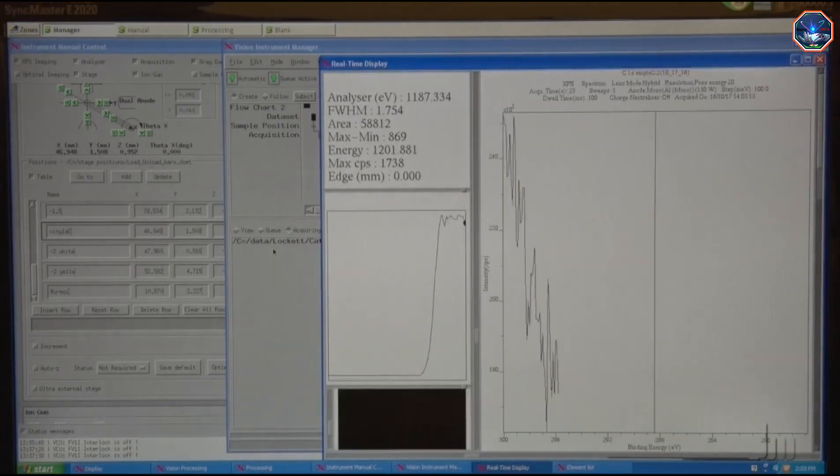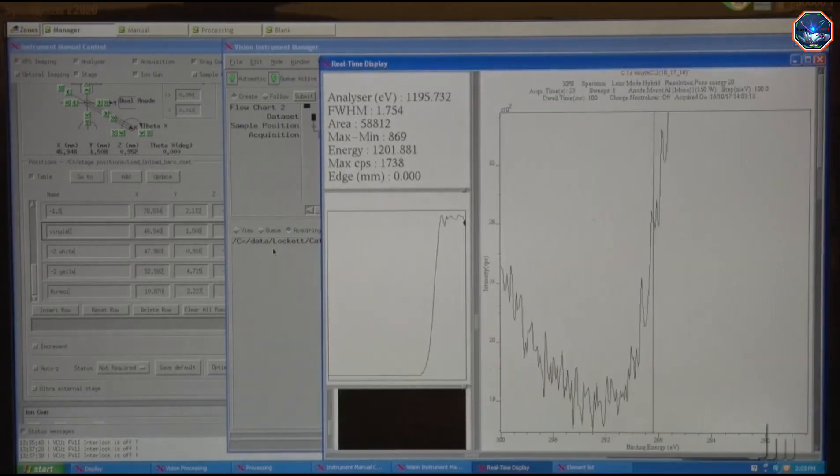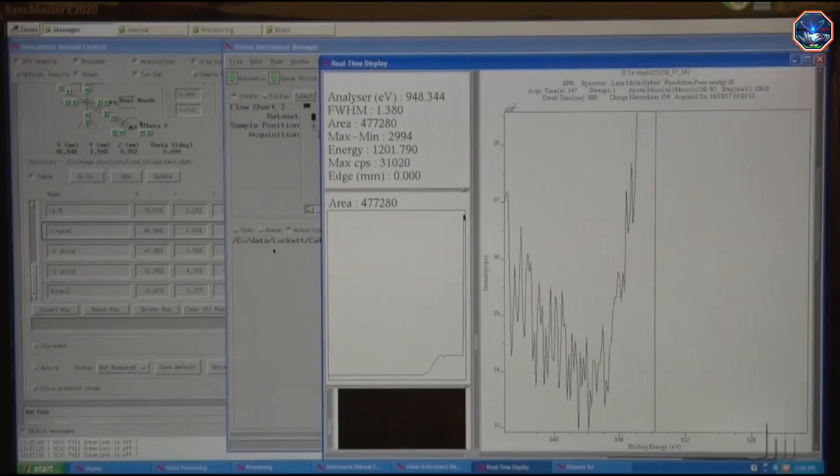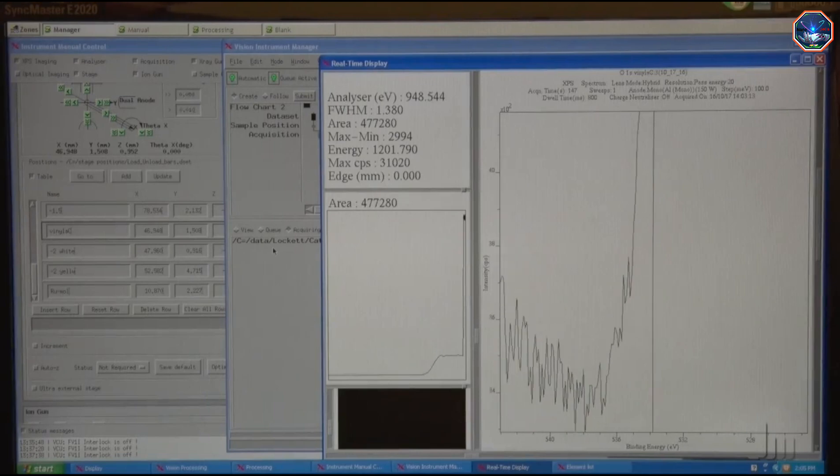The scans for carbon only take a minute or two because there is a lot of carbon present in my samples. The scans for chlorine and sulfur will take longer, about 10 minutes each, because there are fewer of these atoms on the surface.